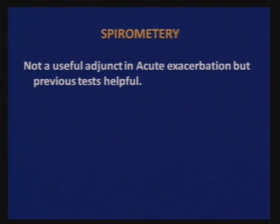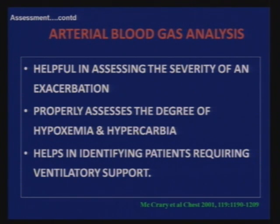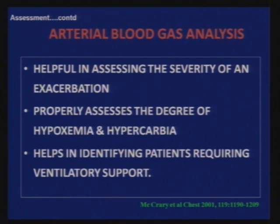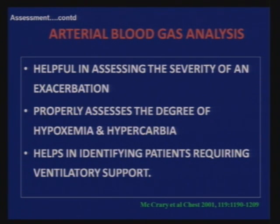Spirometry is not a useful adjunct in acute exacerbations, though previous test reports may provide helpful clues. Arterial blood gases are the most important investigation, helping assess the severity of exacerbation. If previous oxygen levels are available and have fallen, it tells us whether the patient is in respiratory failure. CO2 levels indicate hypercarbia — high CO2 would not be expected in heart failure. ABG also assesses acid-base status and helps identify patients requiring ventilator support, as those with pH less than 7.25 will likely need ventilation and may not do well on conservative management.